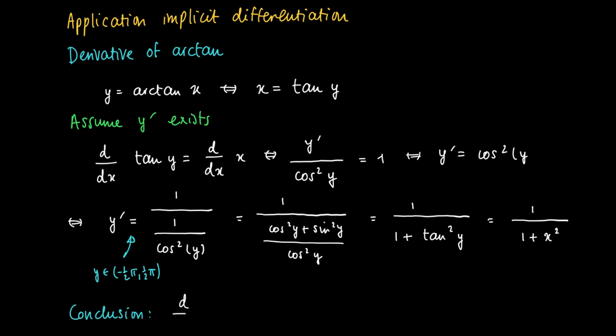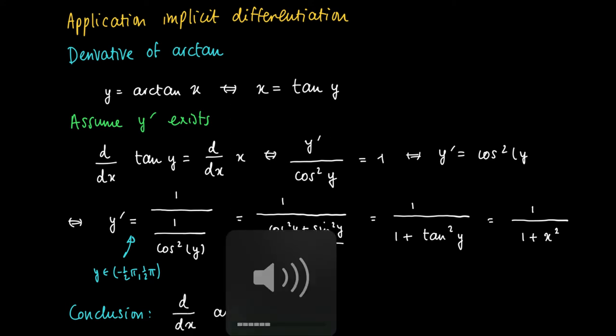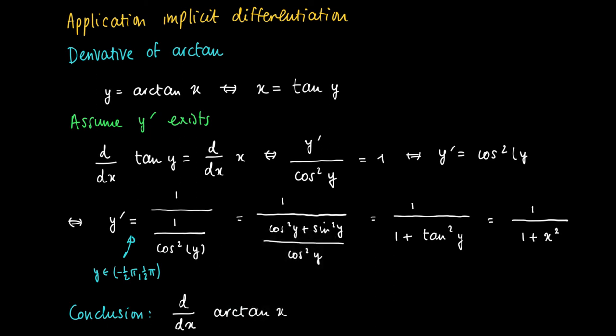As a conclusion, we get that the derivative of the arctangent, which is the inverse of the tangent, is simply 1 over 1 plus x squared. And this holds for all x's in R.